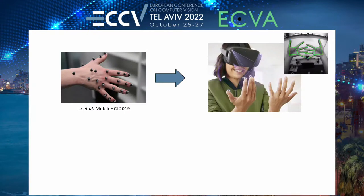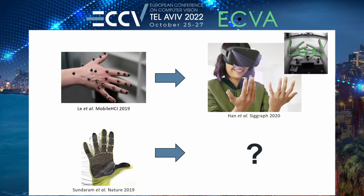We take inspiration from hand tracking, where previously systems that mounted motion capture markers to the hand have been replaced by deep models that track the bare hands. Similarly, we wonder if it's possible to estimate hand pressure without attaching sensors to the hands.